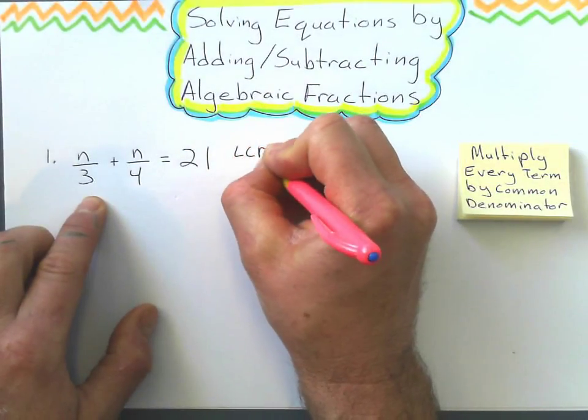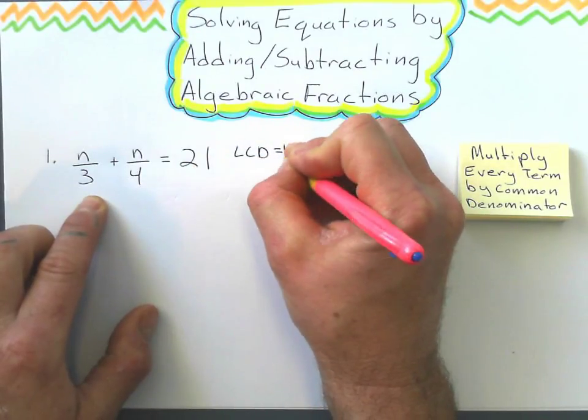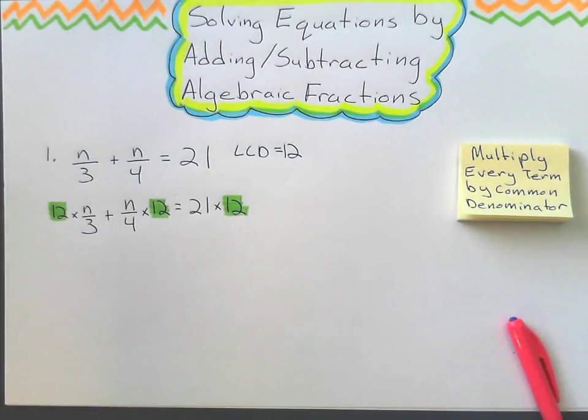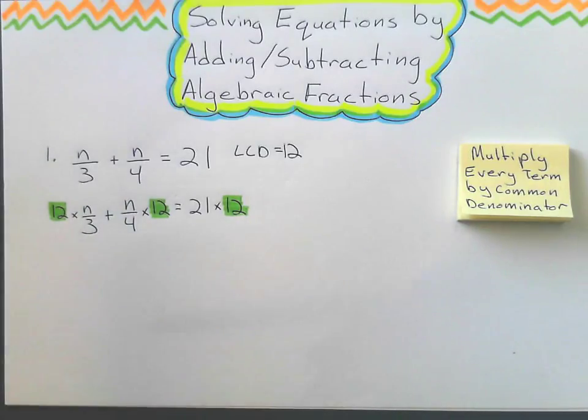The lowest common denominator, or least common denominator for this example, is 12. So I'll multiply everything by 12 and simplify it from there. Okay, so I've multiplied everything by 12. And now what I'm going to do is I'm going to simplify.